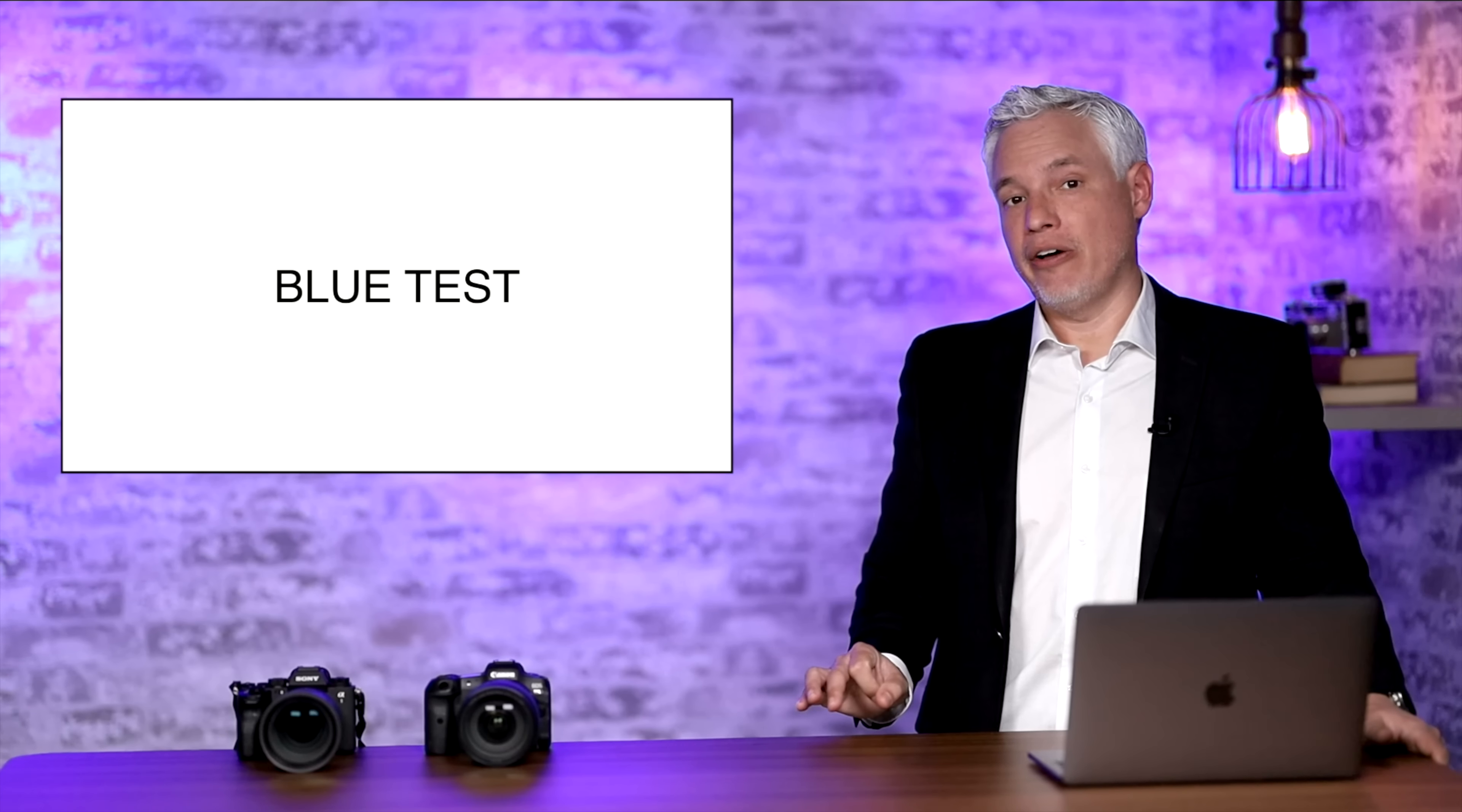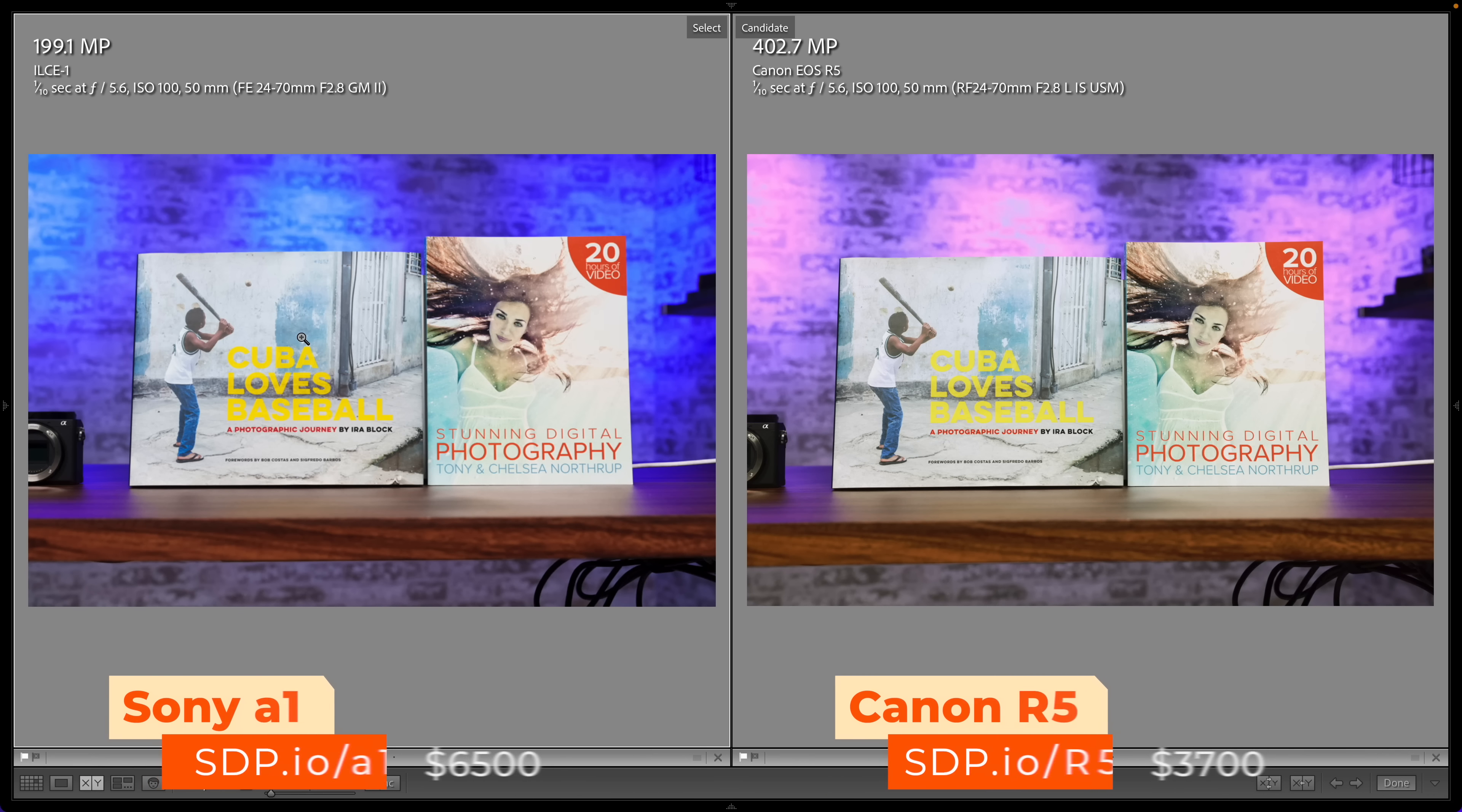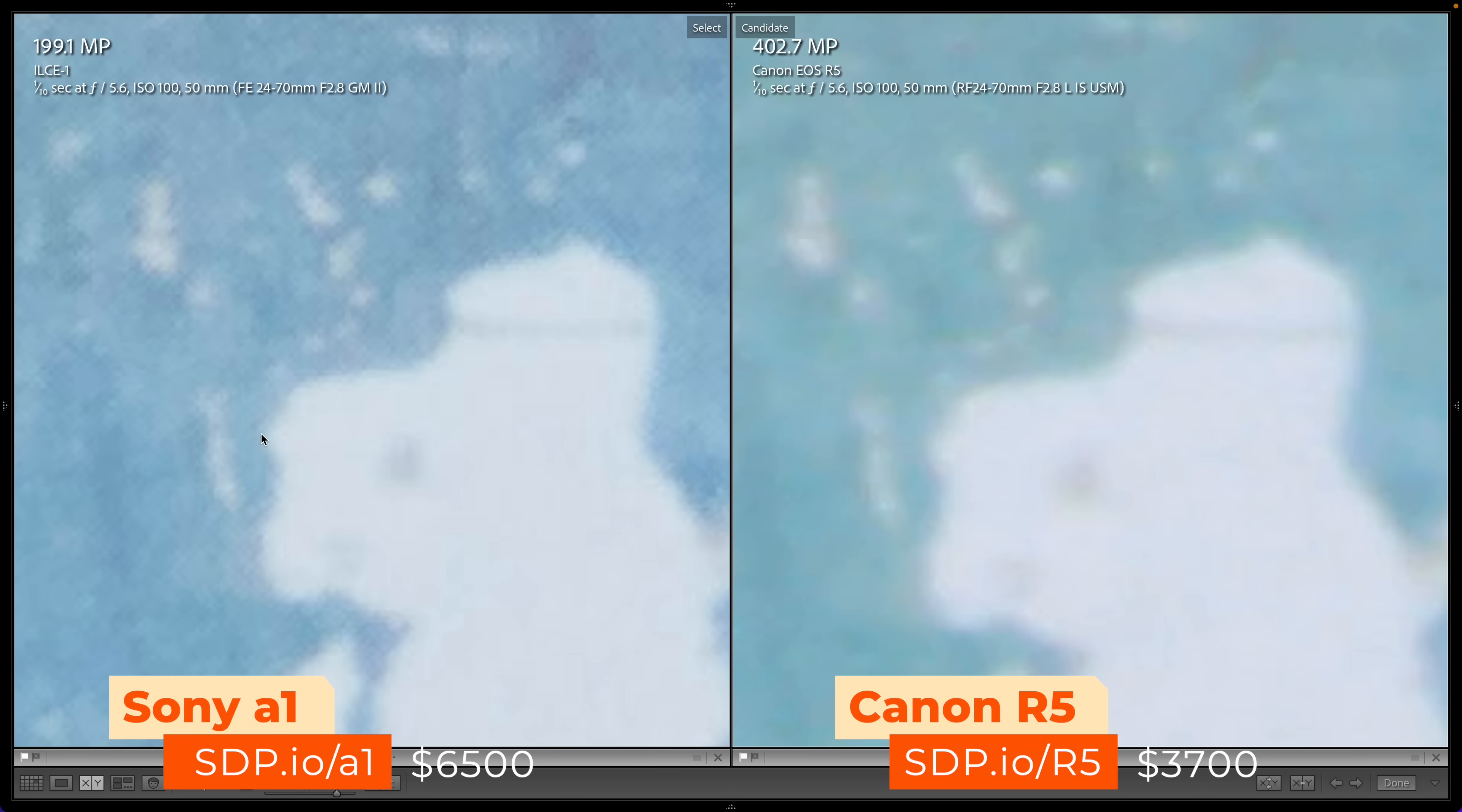To see the effects of this let's take a look at a blue portion of the image by looking at my friend Ira Block's book on Cuba. The Sony reveals the texture of the printed book cover in the blues and the Canon looks completely blurry. Our first test was clearly a win for the Sony.